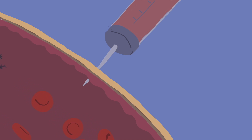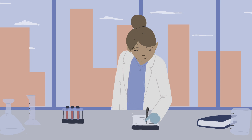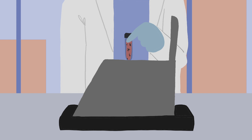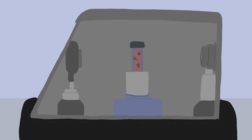Now, with our device, the presence of hemozoin can be used to diagnose patients with malaria earlier than currently used detection methods. Naturally occurring materials in the blood are not magnetic, but hemozoin is. The device leverages this magnetic property of hemozoin.